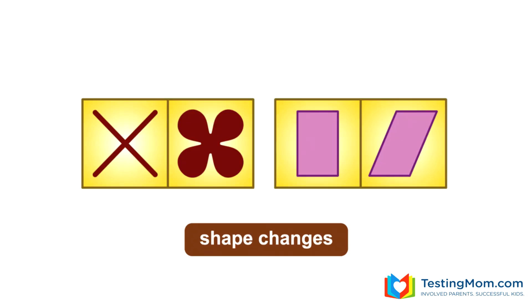The next rule is the shape change rule. Here are two different examples of shape changes from left to right. On the left side, the X turns into a four-leaf clover type shape. On the right side, the rectangle leans to the right, changing the shape.